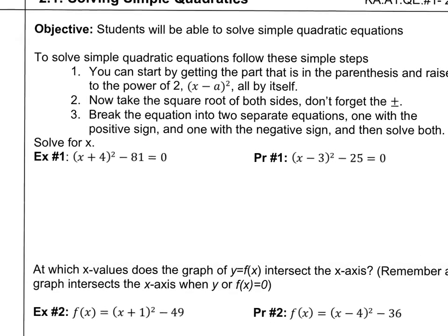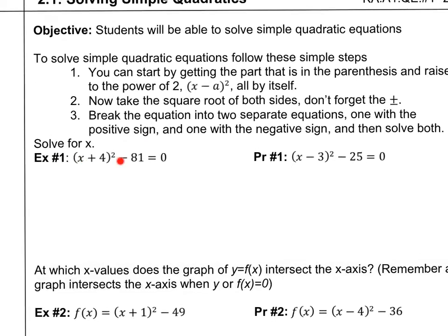So let's just go ahead and get started. Example number 1, we have this equation here, and we're supposed to solve for x. So it says you can start by getting the part that is in the parentheses and raised to the power of 2 all by itself. That's this part. So I want this on the other side of the equation. So that just means I'm going to add 81 to both sides. If I do that, I get x plus 4 squared equals 81.